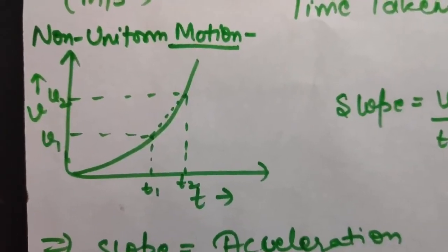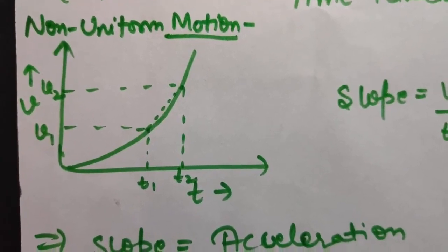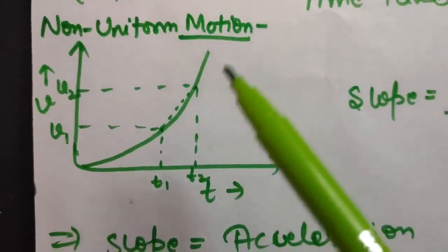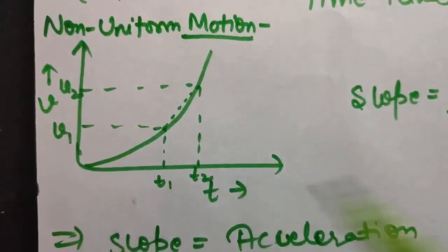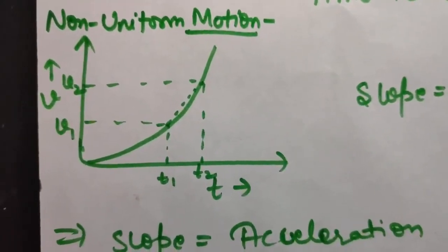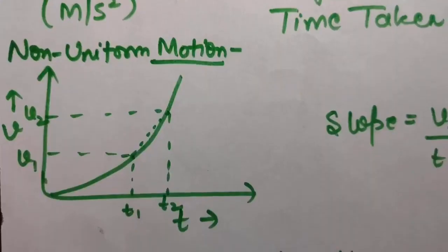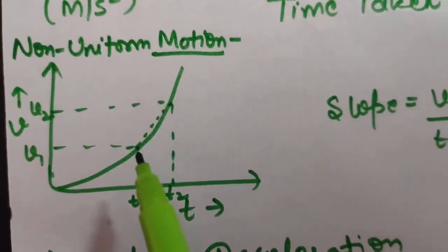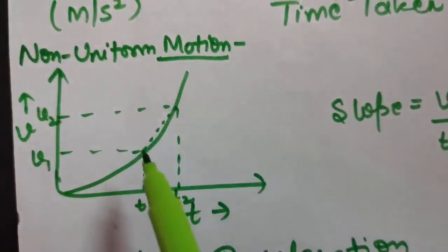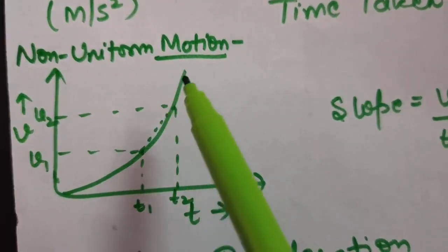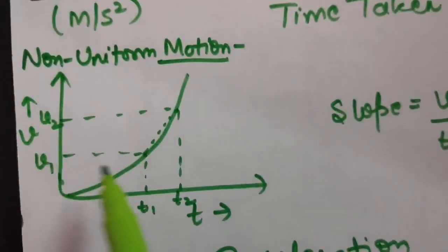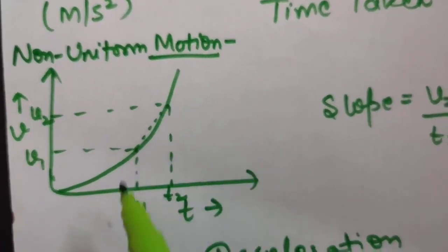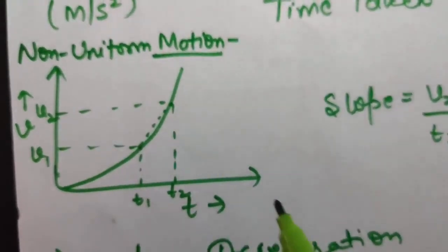For a non-uniform motion velocity-time graph, since velocity is not constant, the graph can take any variable shape. In a special case of increasing acceleration, velocity increases very rapidly in a short time, as seen from the steep area of the graph.